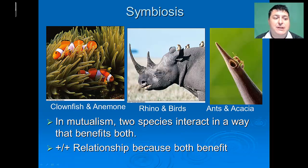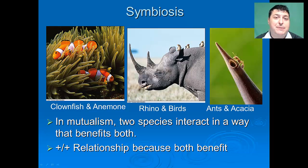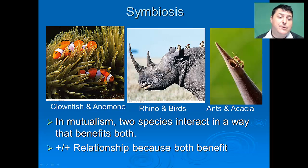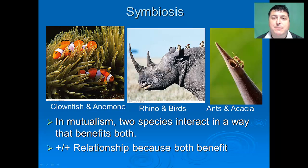The next type of symbiosis is mutualism. In a mutualistic relationship, two species interact in a way that they both benefit — a plus-plus relationship. A common example would be the clownfish and the anemone, like from Finding Nemo. The anemone provides a home and protection for the clownfish, while the clownfish protects the anemone from anything that might eat it. A rhinoceros and parasite-eating birds is another plus-plus relationship — the rhino gets cleaned and the birds get food. A third example would be ants and an acacia bush. The acacia provides home and food for the ants, and the ants protect the acacia by swarming anything that brushes up against or begins to eat it.